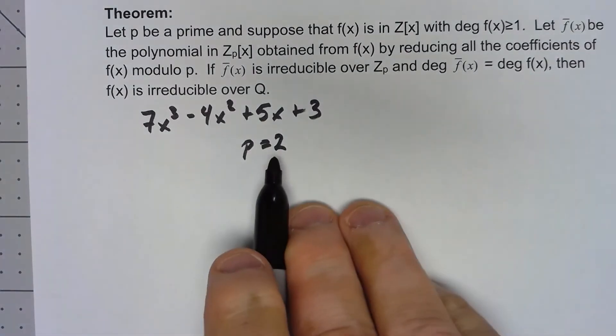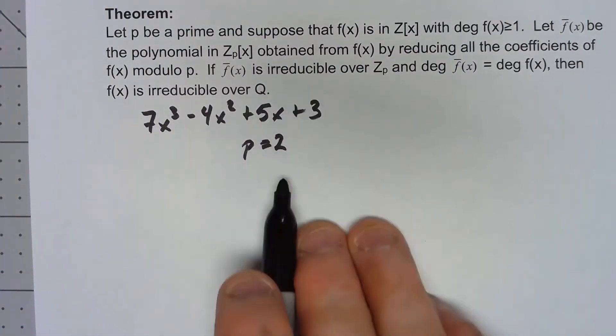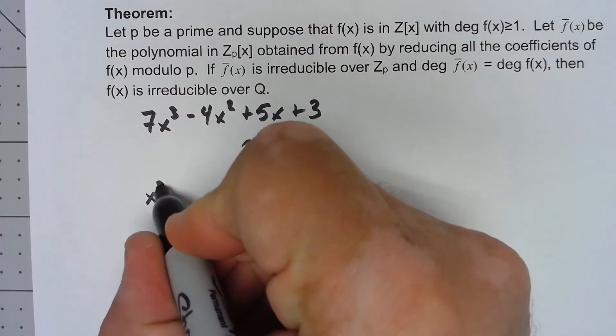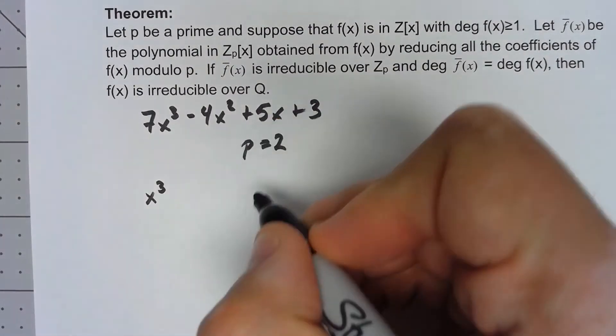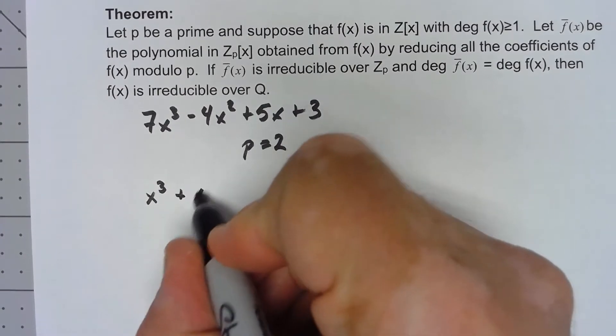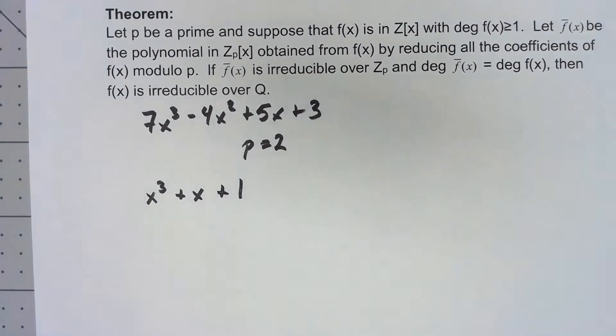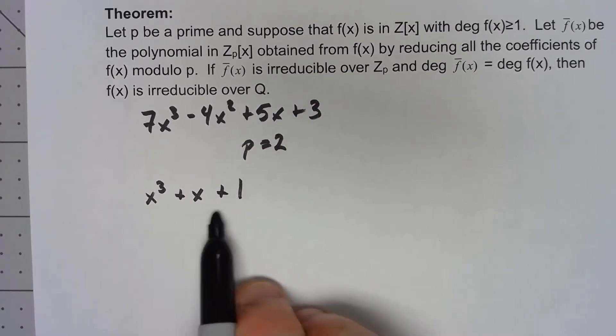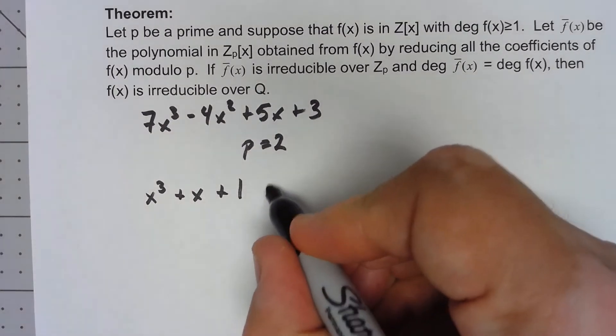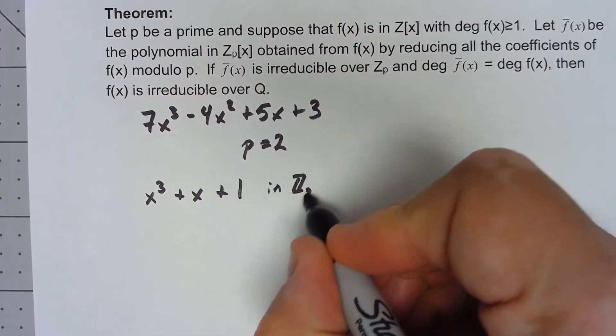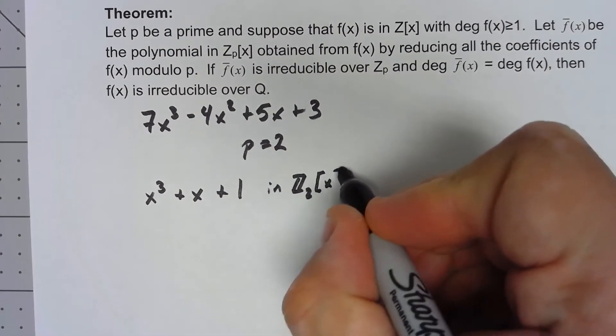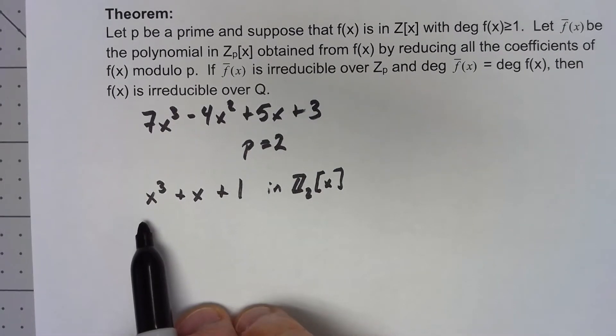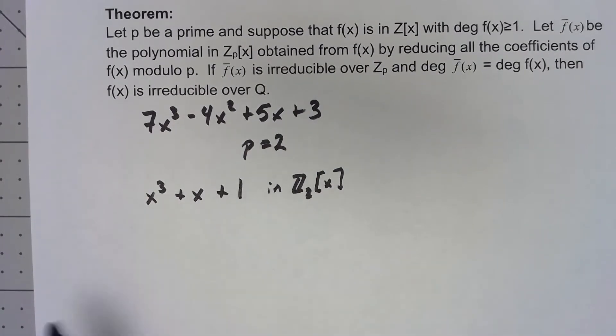It's a very common one to use. So if I reduce all the coefficients mod 2, I get x³ + x + 1. Now that's a cubic polynomial in Z₂[x], and a previous theorem is that if a cubic polynomial factors, then it must have a zero in that field.